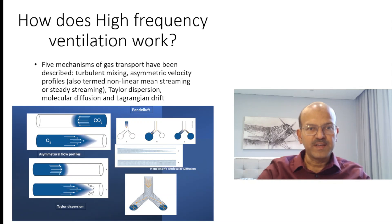Asymmetric velocity profiles, also called non-linear streaming. For example, we have the gas coming in with increased velocity, so we have the conical shape. The gas coming out with more carbon dioxide comes in the periphery, and this asymmetrical flow pattern causes the mixture of gases.